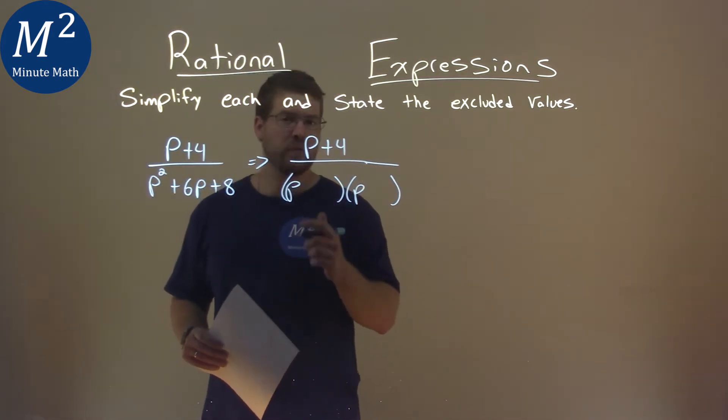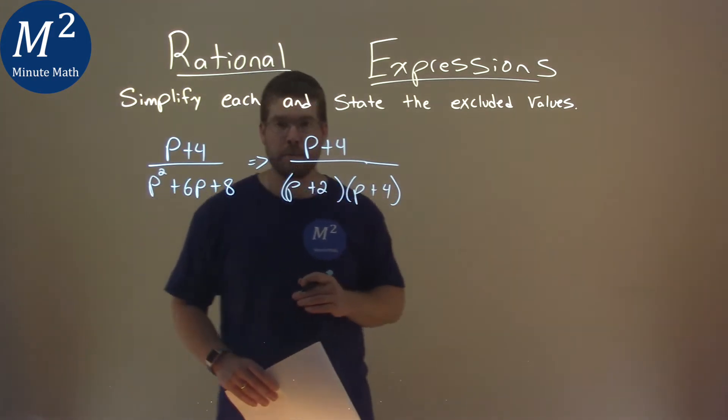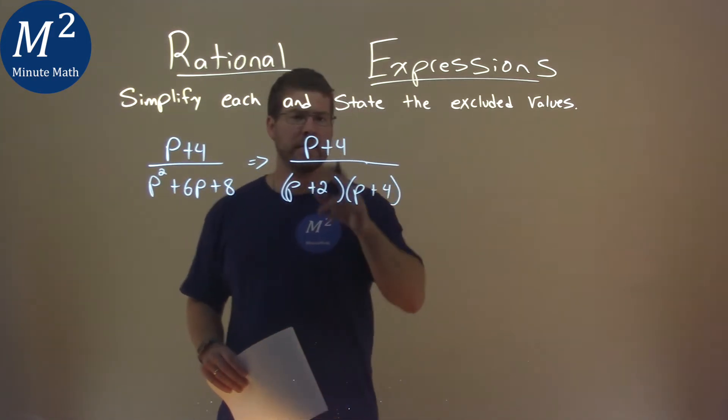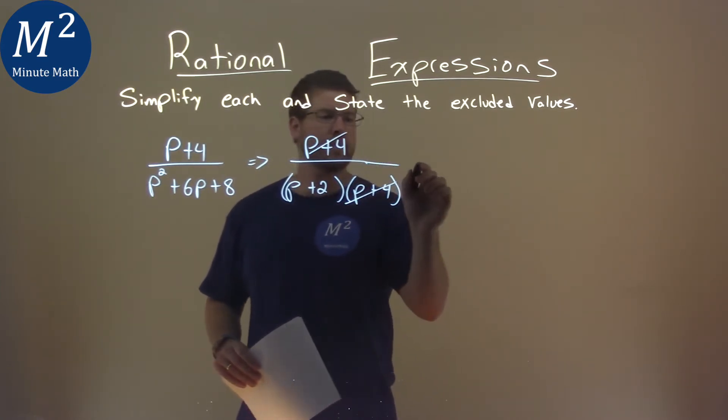We've got a plus 2 here and a plus 4 right there. So as we're simplifying, we can see the p plus 4 and p plus 4 here cancel out. Cancel that out and we keep going.